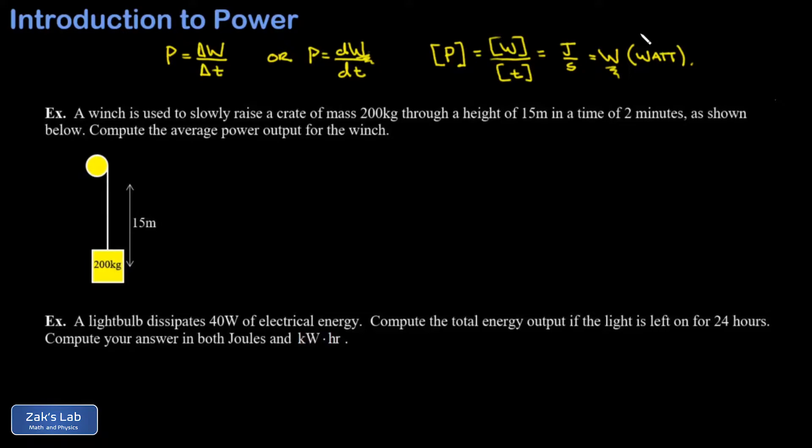In the first example, a winch is used to slowly raise a crate of mass 200 kilograms through a height of 15 meters in a time of 2 minutes, and we're asked to compute the average power output for the winch.